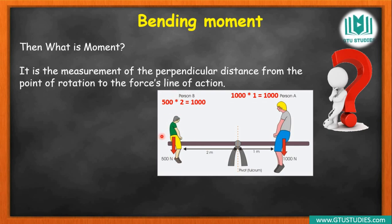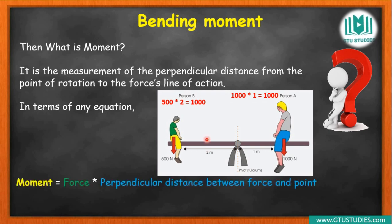If the force is vertical, the perpendicular is horizontal. So in the equation, the moment is force into perpendicular distance. As we defined: moment equals force into perpendicular distance. Symbolically, the moment symbol is capital M, the force symbol is capital F, and the distance — which is perpendicular — we denote by D. So M = F × D.